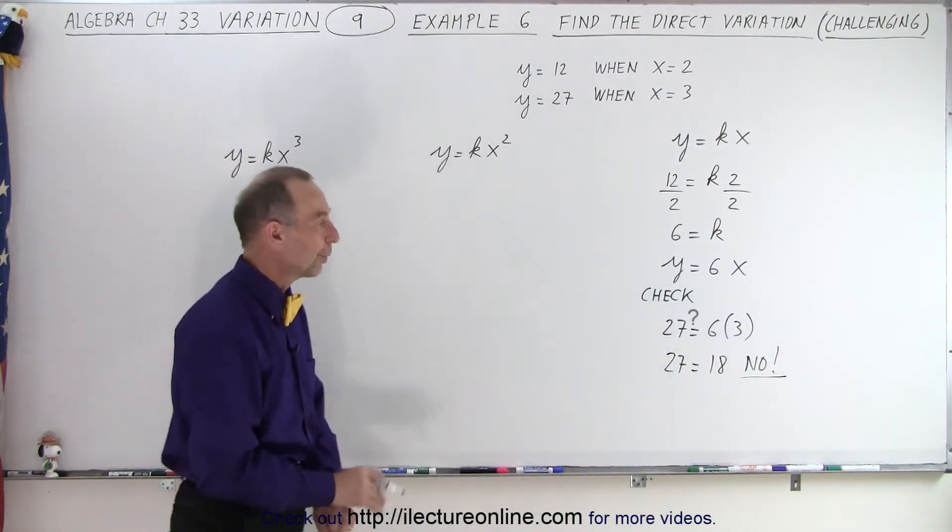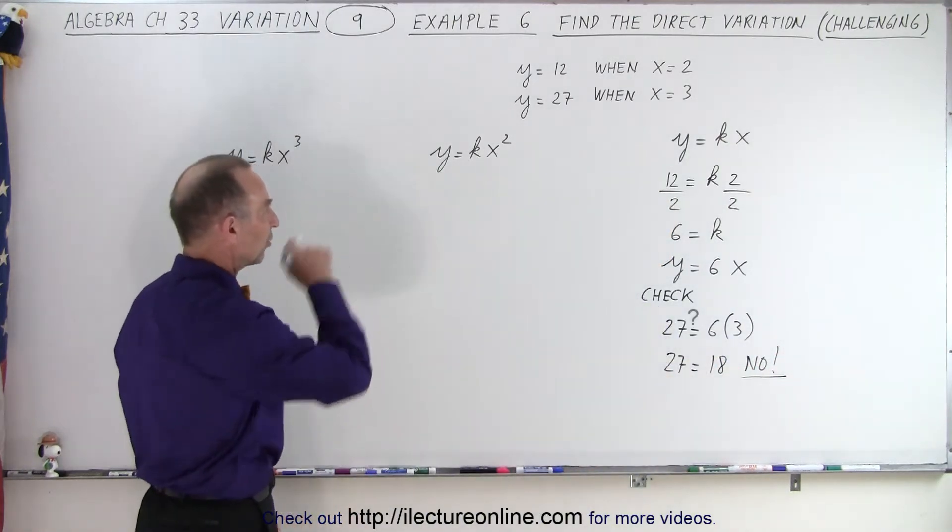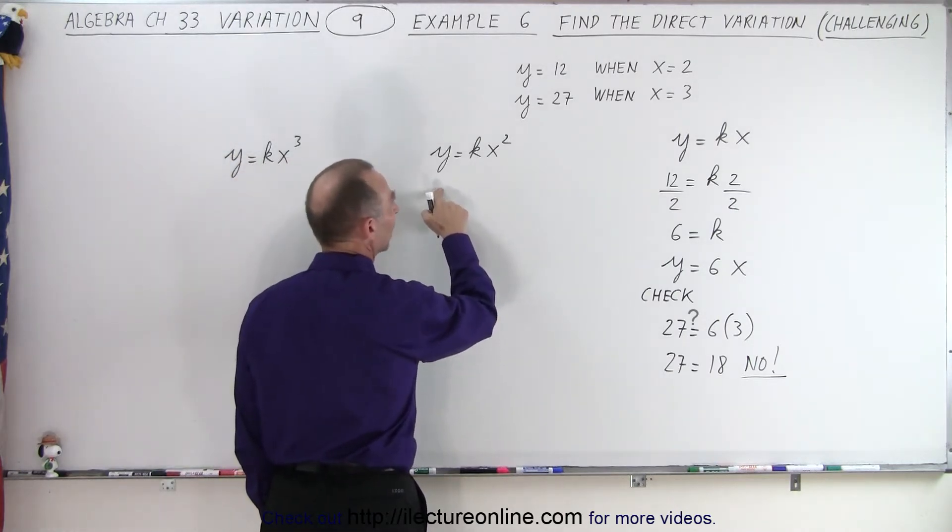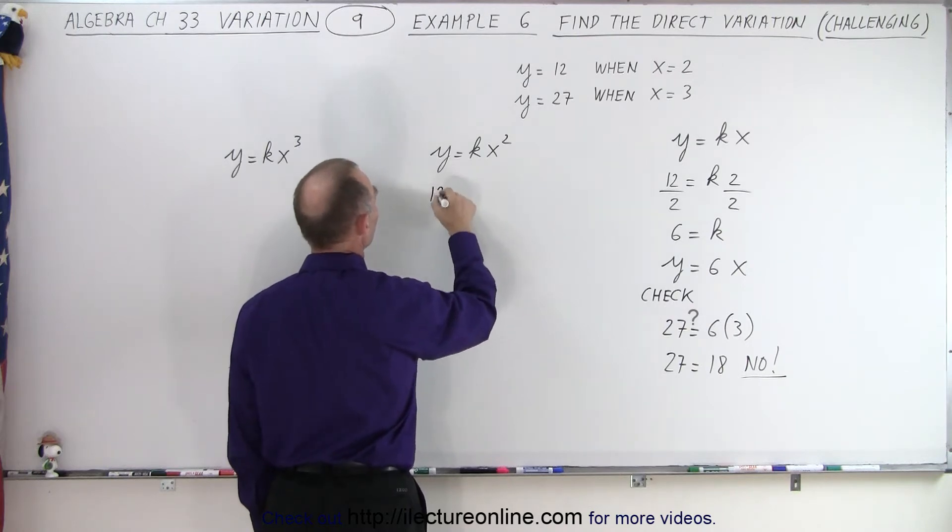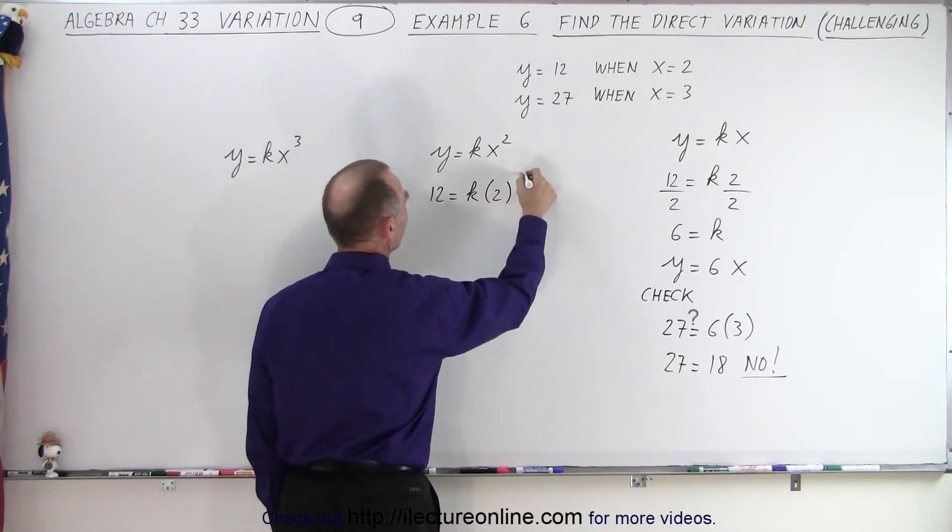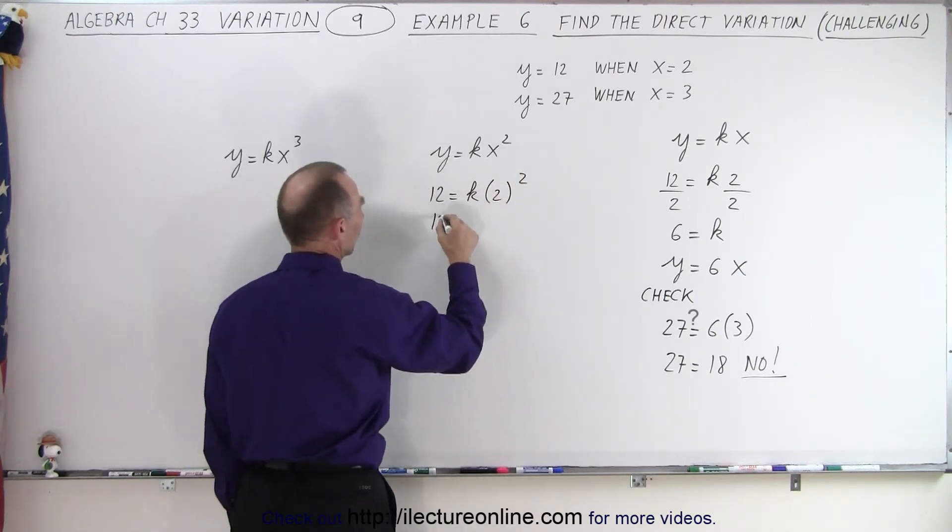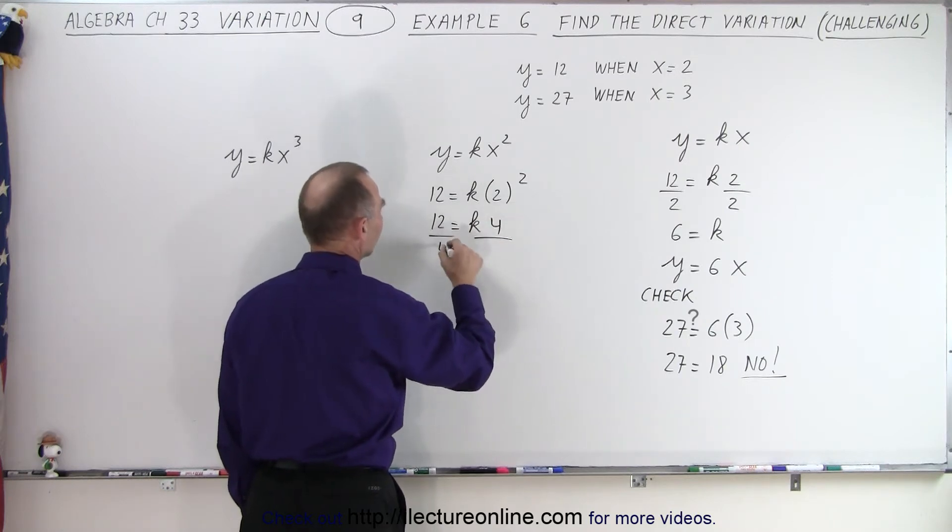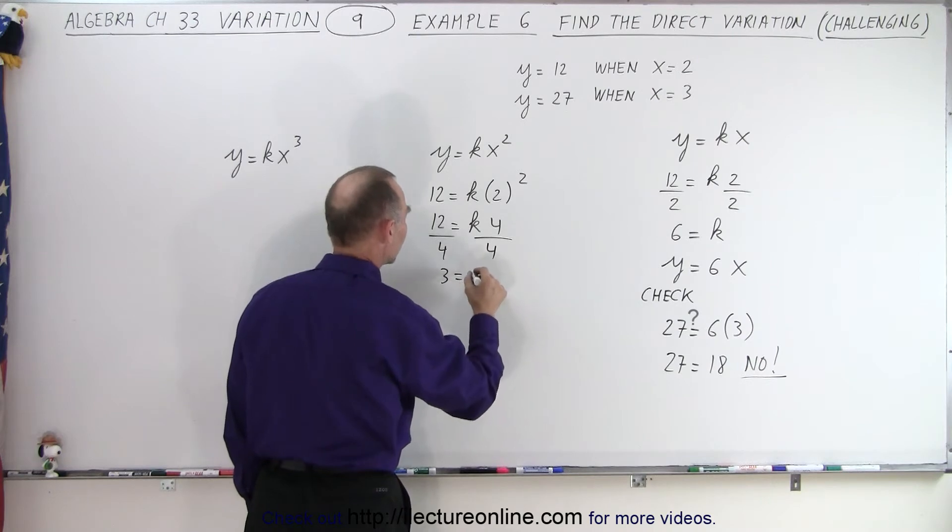So let's try this equation right here. In this case, we're going to get y, which is equal to 12, equals k times x squared. x is equal to 2, so 2 squared. So we have 12 is equal to k times 4, divide both sides by 4, and we get 3 is equal to k.